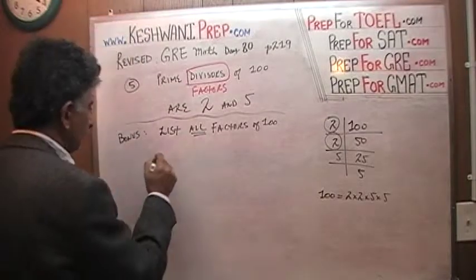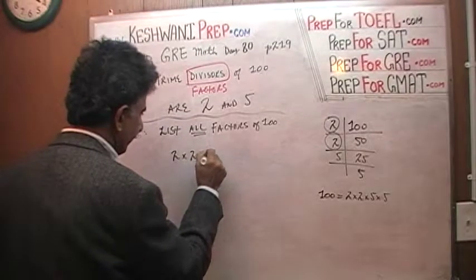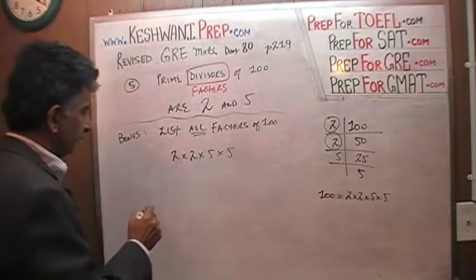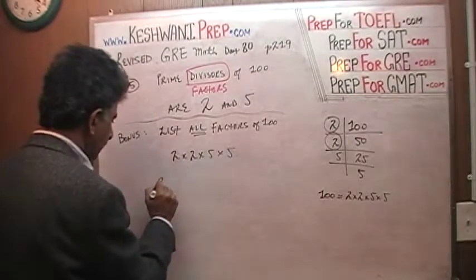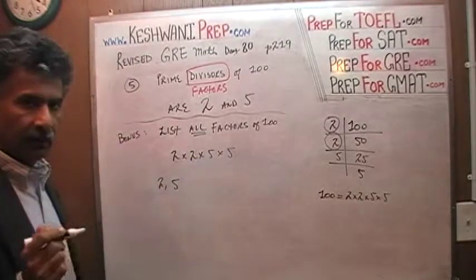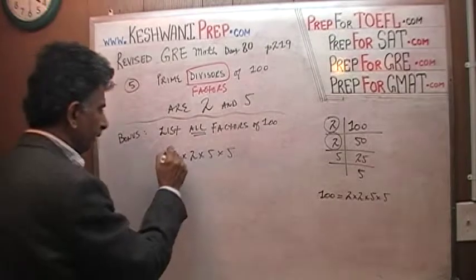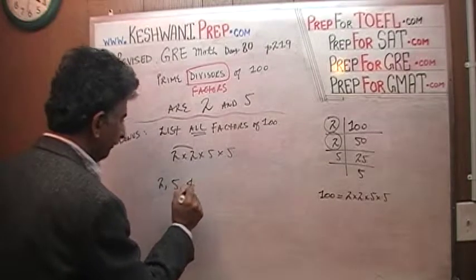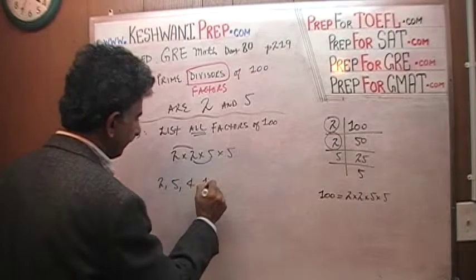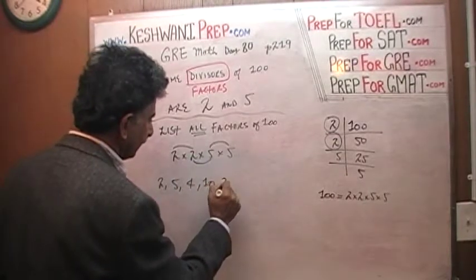Here's how we do it. We know 100 equals 2 times 2 times 5 times 5. So let's take care of singles first: we have a 2 and we have a 5. That takes care of singles. Now we do pairs — slowly, so we don't miss anything. 2 times 2 is 4. 2 times 5 is 10. 5 times 5 is 25. So we took care of our pairs.